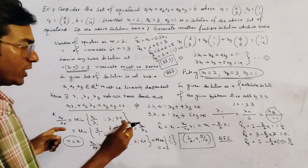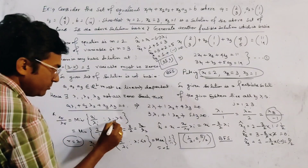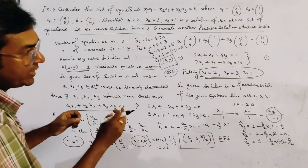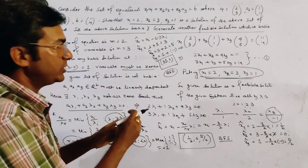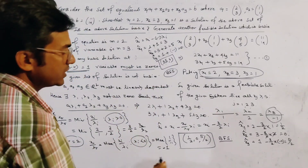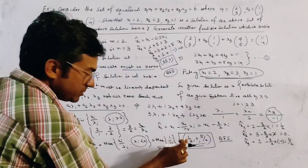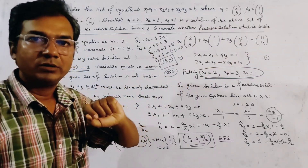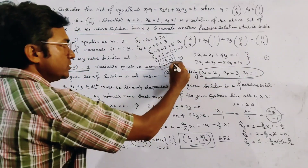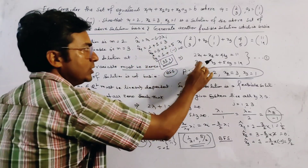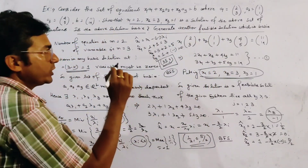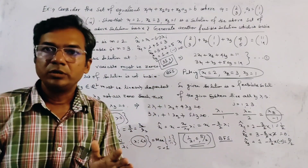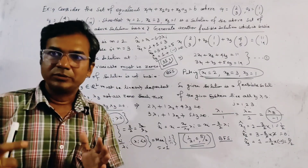We can use either method — taking lambda_i > 0 or lambda_i < 0. This is a very important problem for your exam, and we get two different answers. But if we substitute either solution into the given system, both satisfy the equations. So we successfully generate the basic feasible solution from the given feasible solution.